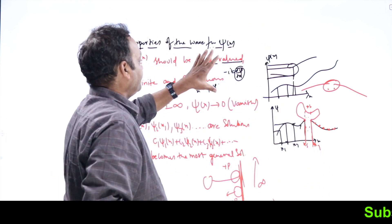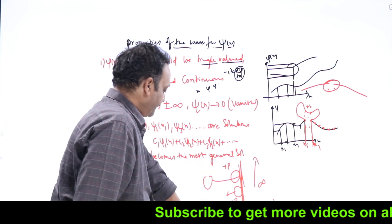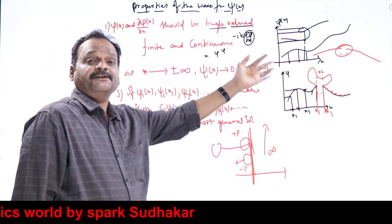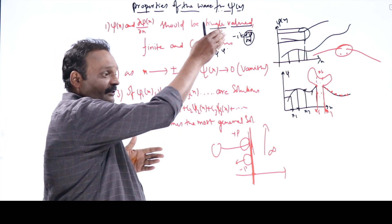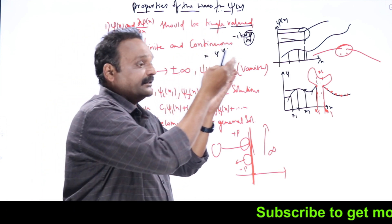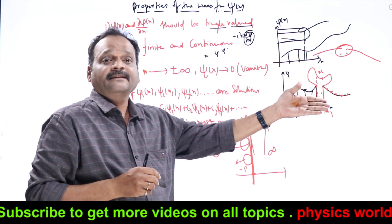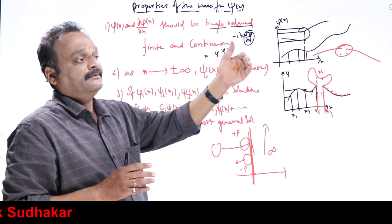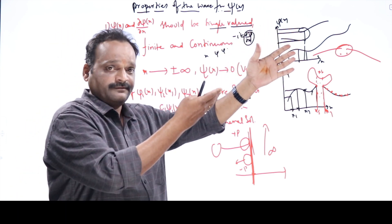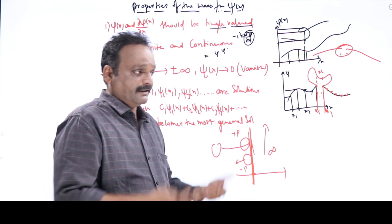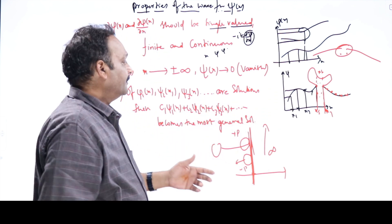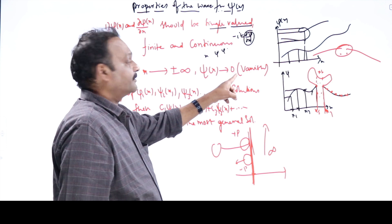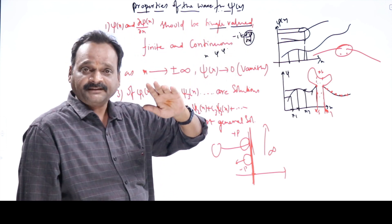The second important property is that as x tends to plus or minus infinity, psi(x) should vanish. When x goes to infinity, the wave function cannot exist there. If the wave function exists at infinity, it means there is a probability of finding the particle at infinity — but we cannot go to infinity, and nothing should happen there. So the probability should become zero, meaning the wave function should vanish at infinity.